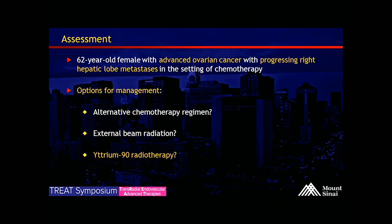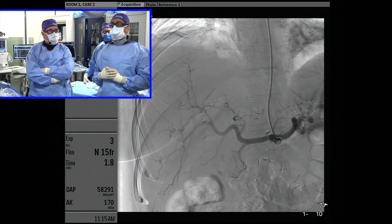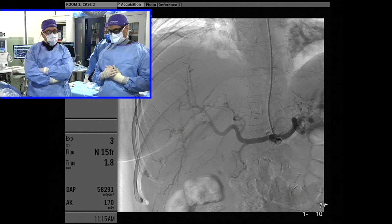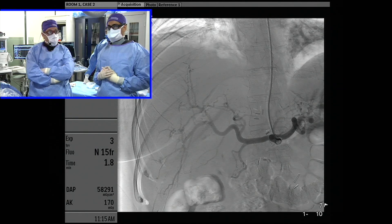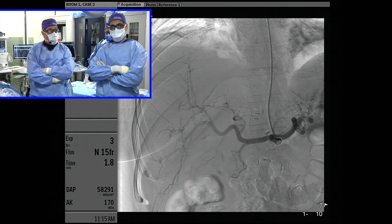Our 62-year-old female has advanced ovarian cancer with progressing right hepatic lobe mets in the setting of chemotherapy. Options for management included an alternative chemotherapy regimen, external beam radiation, and what we're intending here, Y-90 radiotherapy. Our plan is to do an MAA injection today for mapping prior to planned SIRspheres radioembolization next week. We'll be using a transradial approach to reduce bleeding complications since our patient is on Coumadin, and cone beam CT for treatment planning. This is an off-label use for SIRTEX, but this is a good discussion point about using Y-90 for metastases beyond colorectal and neuroendocrine tumors.